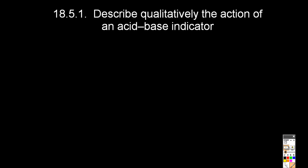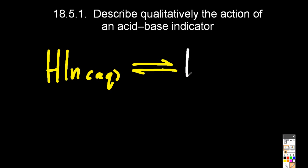Acid-base indicators tend to be weak acids. So the IB chooses HIN as its weak acid and we'll pretend that that's yellow.